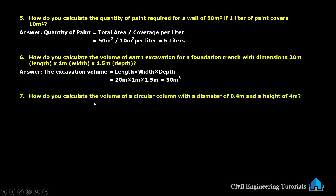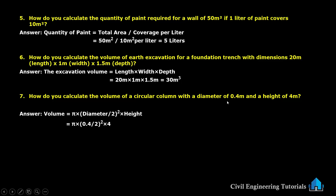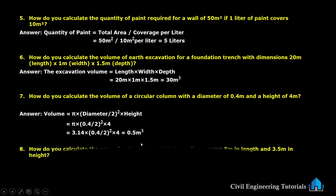Next question: how do you calculate the volume of a circular column with a diameter of 0.4 meter and height of 4 meter? The formula is: volume = π × (diameter ÷ 2)² × height. With diameter 0.4 m and height 4 m, we get 0.5 cubic meters.